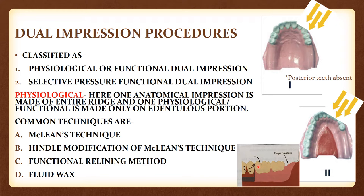We can prevent this tissue-ward movement of the denture by recording a functional impression, where the tissues are recorded under compression. In these dual impression techniques, two impressions are taken: a functional impression and an anatomical impression. The anatomical impression is taken at rest, while the functional impression is taken under masticatory force — the patient is asked to chew or bite.